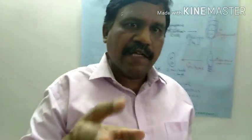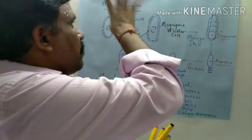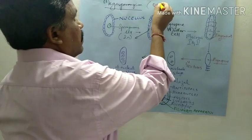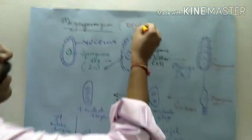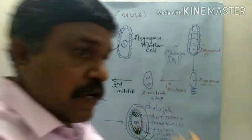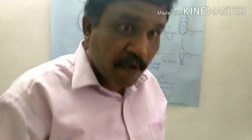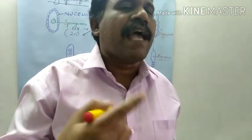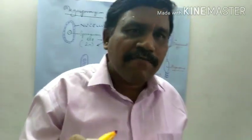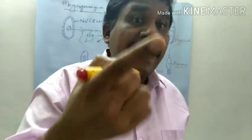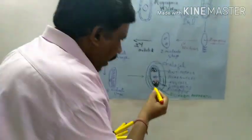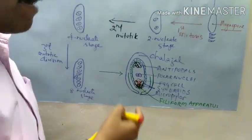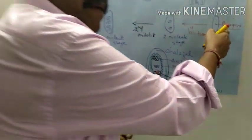Megaspore, as you know, is what is developed in the Megasporangium. What is the Megasporangium? That is the ovule. So Megasporangium is called as the ovule — that was discussed in the last class. Now this Megaspore is the first cell giving rise to the female gametophyte.